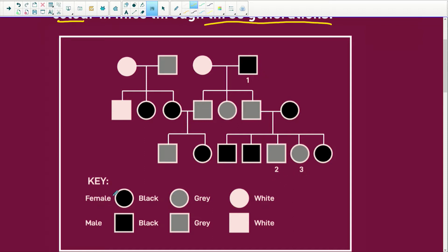So let's look at our key. That's the first thing. So females are always circles, all right? They always seem to make female circles and males the squares. But look here, if it's shaded in black, well then it's a black coat colour, and grey coat colour and white coat colour. So there's white, and then the rest are grey and black.